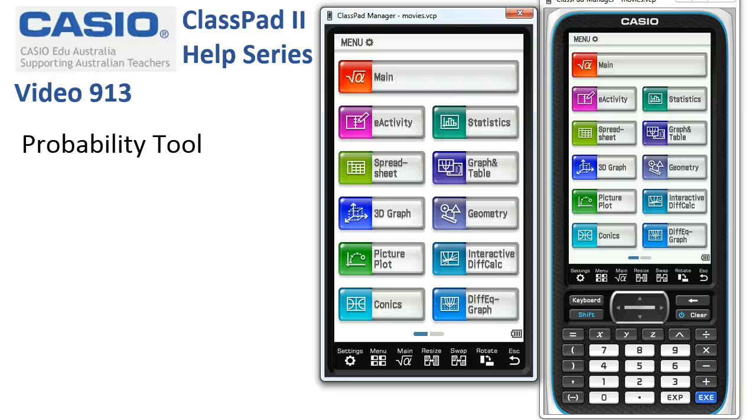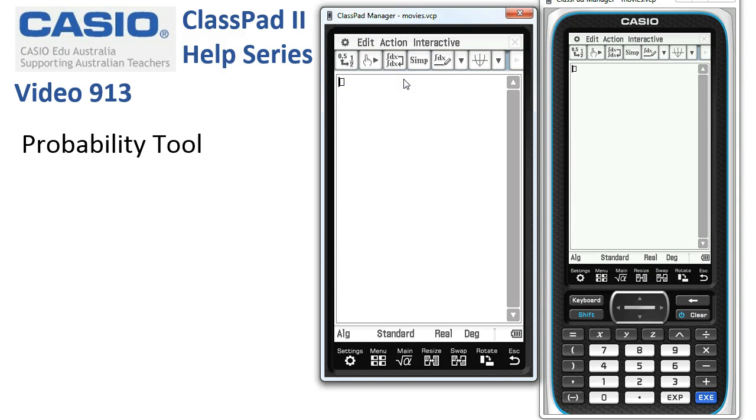Exploring the built-in probability simulation tool. This is in main. We can also access it through reactivity, but let's have a look where it lives here.